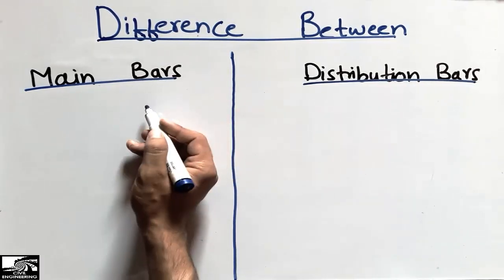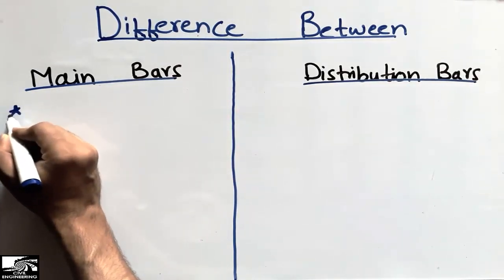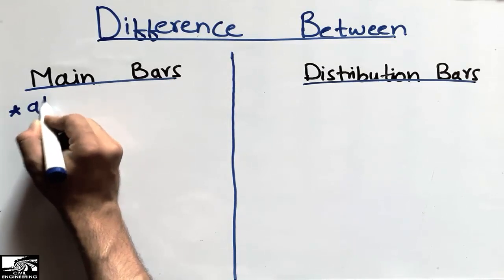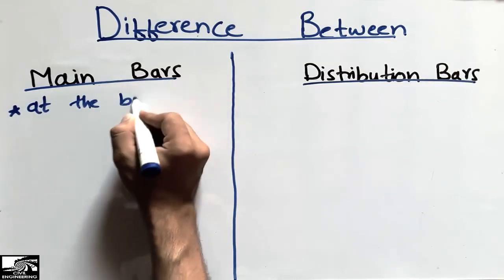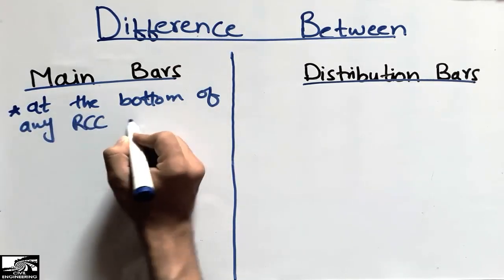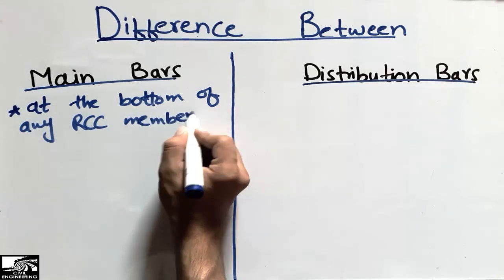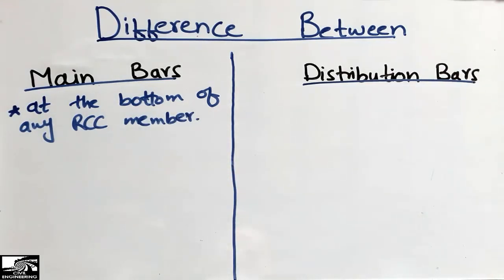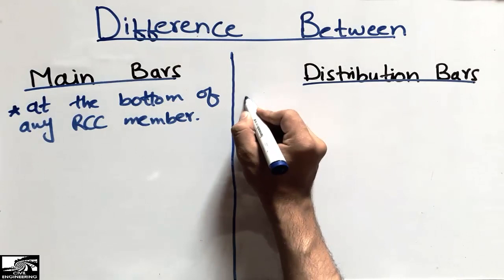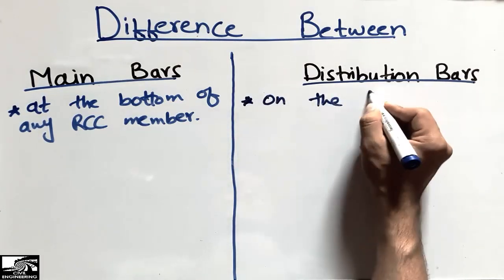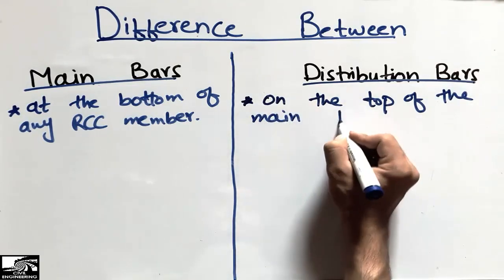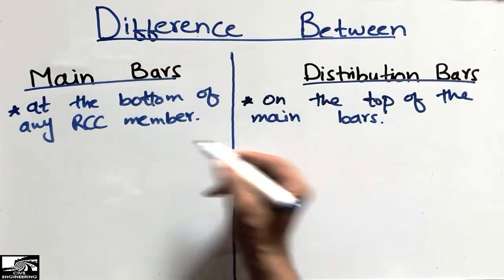The first difference between these two types is that the main bars are those bars which are provided at the bottom of any RCC member — it may be a slab or a footing — while distribution bars are those bars which are provided on the top of the main bars.